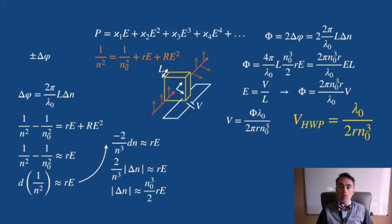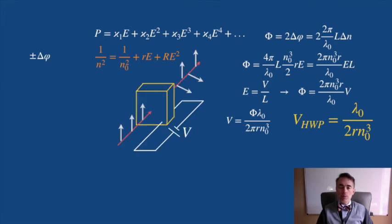You can use a Pockel cell to apply a DC voltage to rotate the polarization of pulses of photons and use this in quantum key distribution to generate the different polarization states. And you can do this at a rate of the order of the gigahertz.